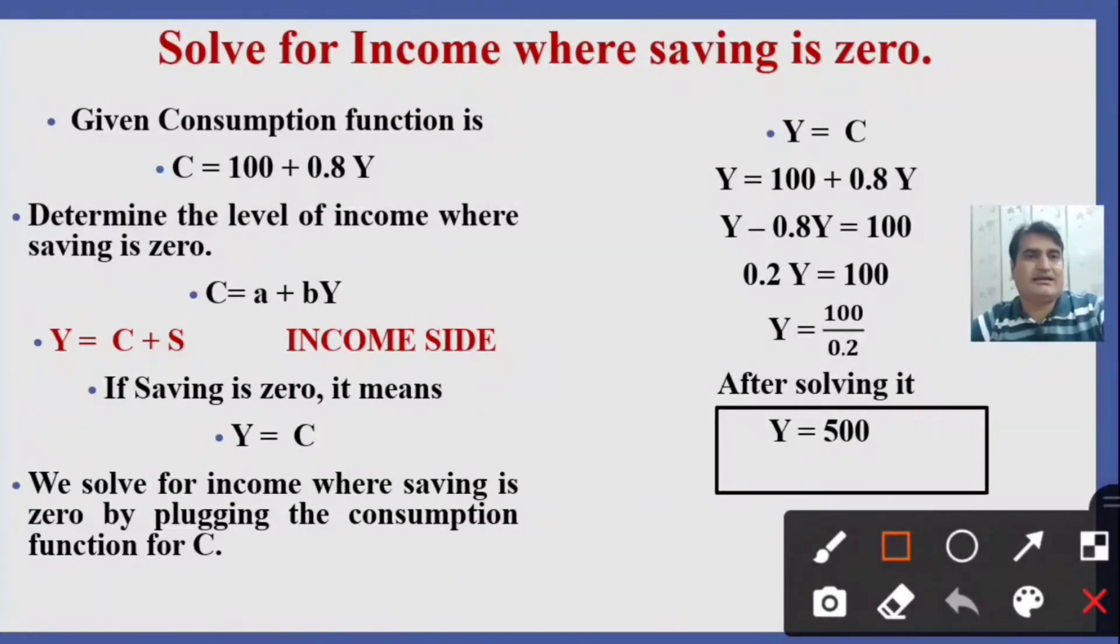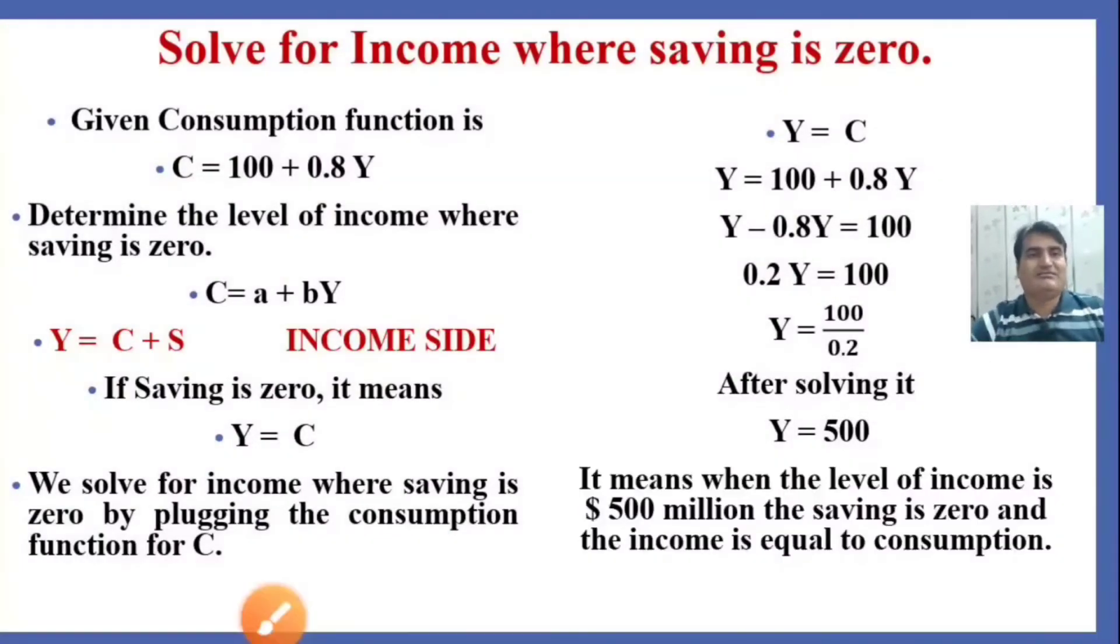You can see here that the income is 500 when the saving is zero. Why? Because the income and consumption are equal. It means when the income is equal to consumption.